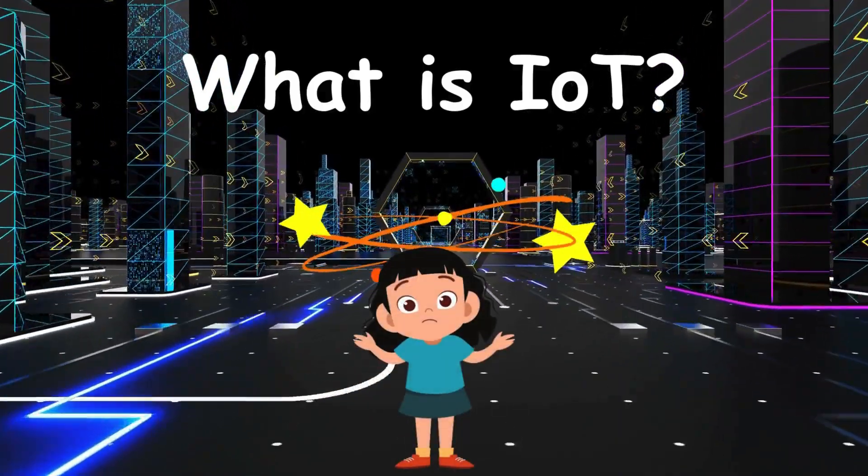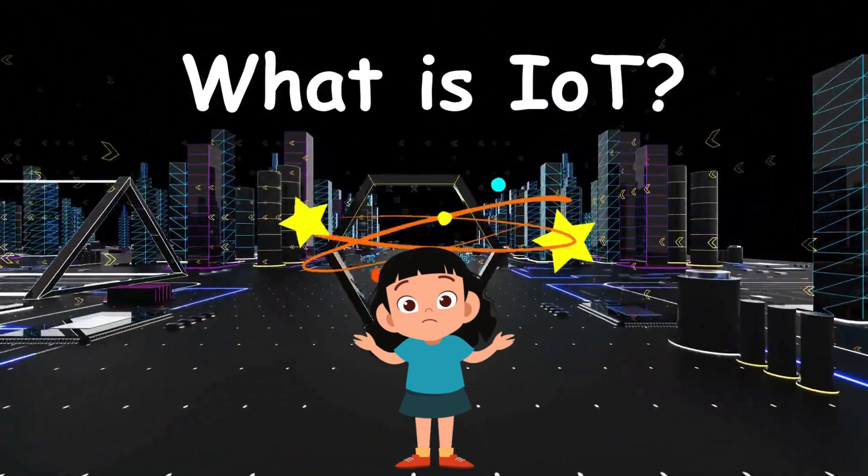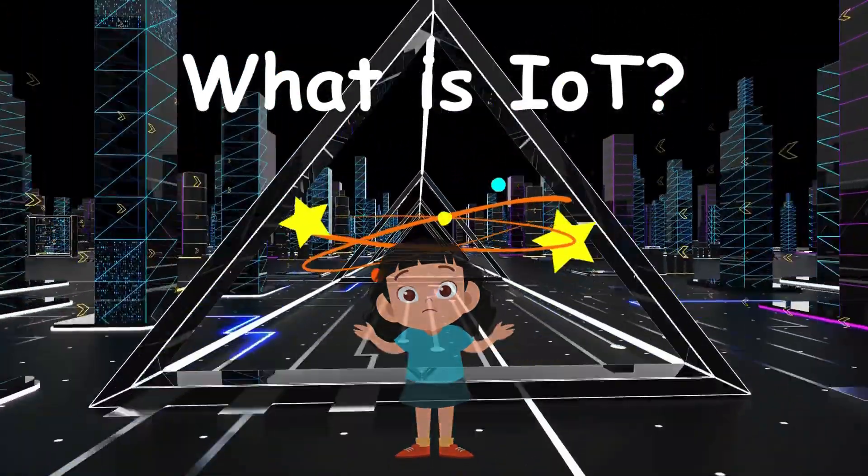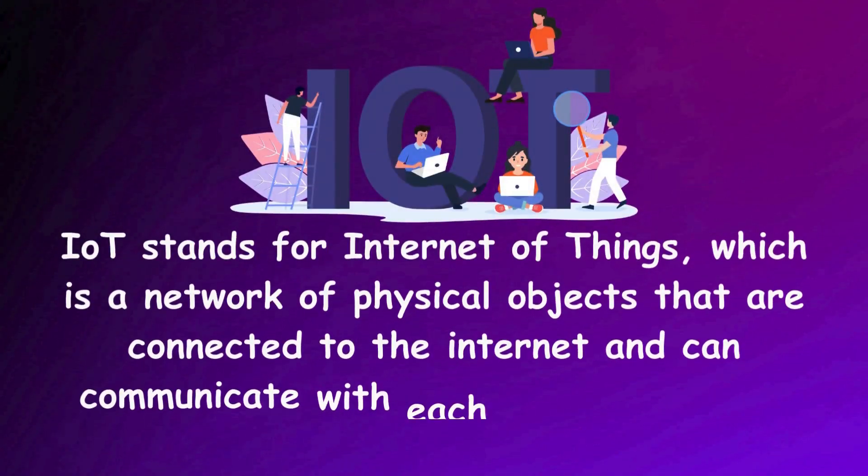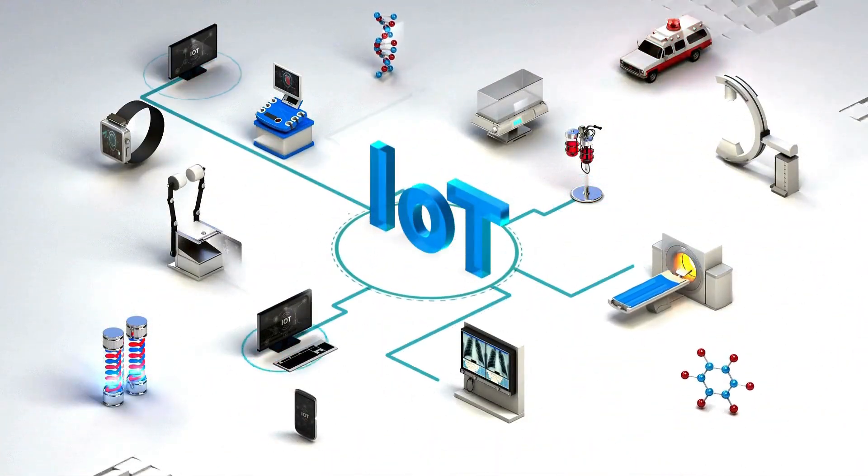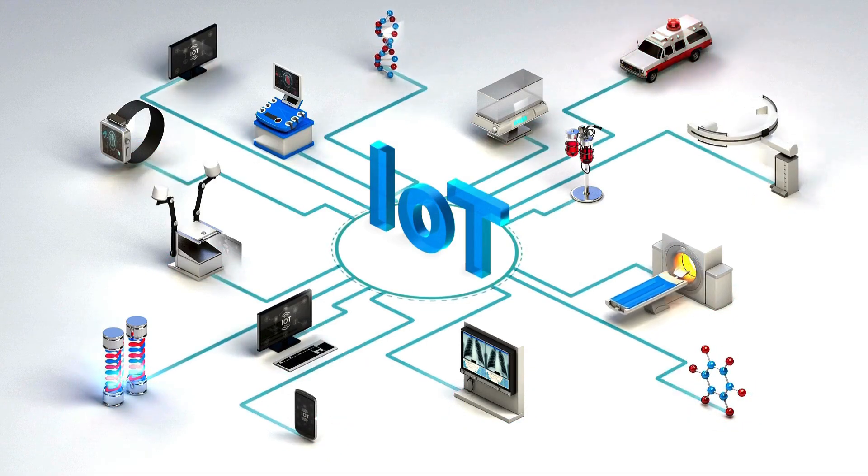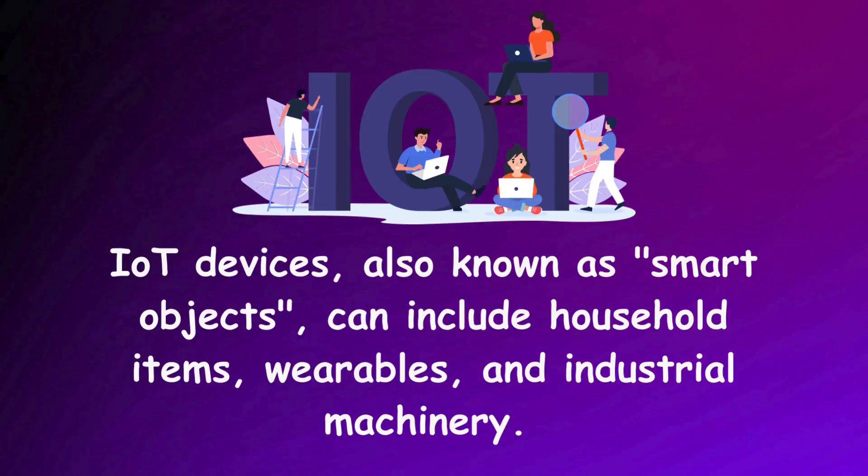Miss, my head is spinning so badly. What's this IoT now? IoT stands for Internet of Things, which is a network of physical objects that are connected to the Internet and can communicate with each other and other systems. IoT devices, also known as smart objects, can include household items, wearables, and industrial machinery.